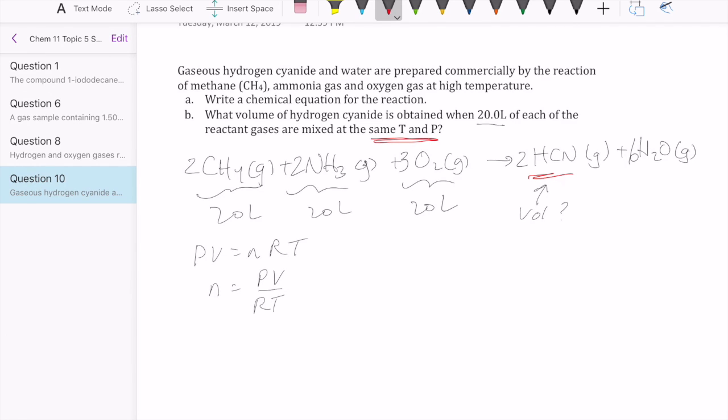So the key is to understand that what they're saying here is that reaction is run at the same temperature and pressure, which means at the start of the reaction, you have some pressure temperature. At the end of the reaction, you have the same pressure and temperature. So pressure and temperature are constant.